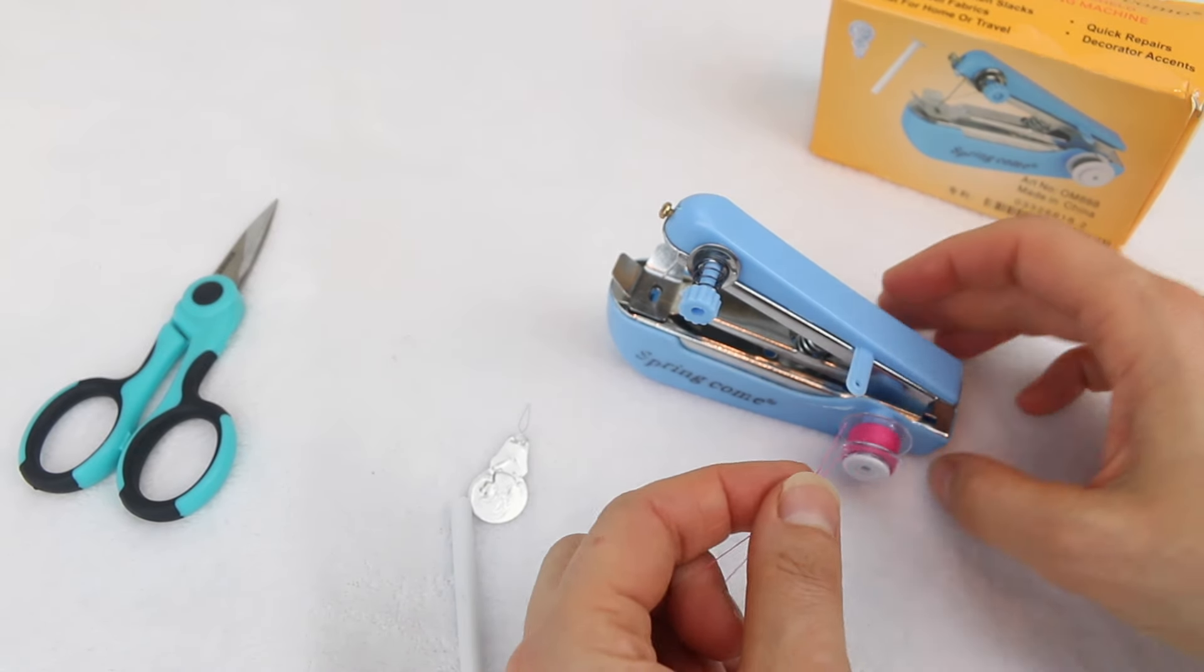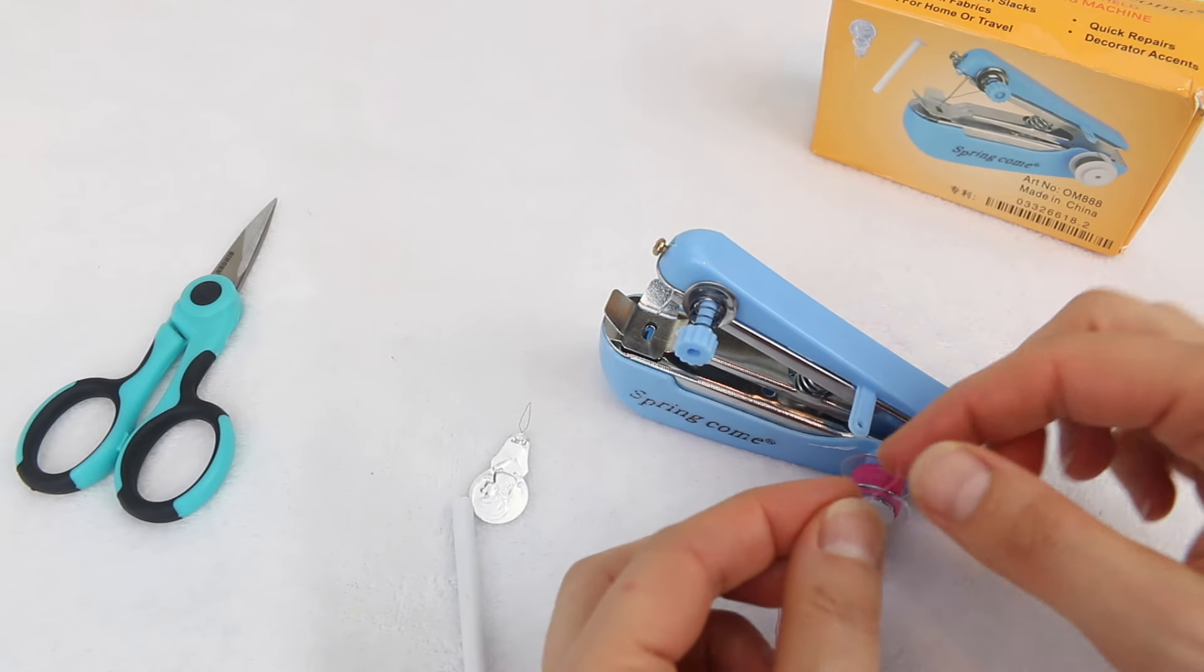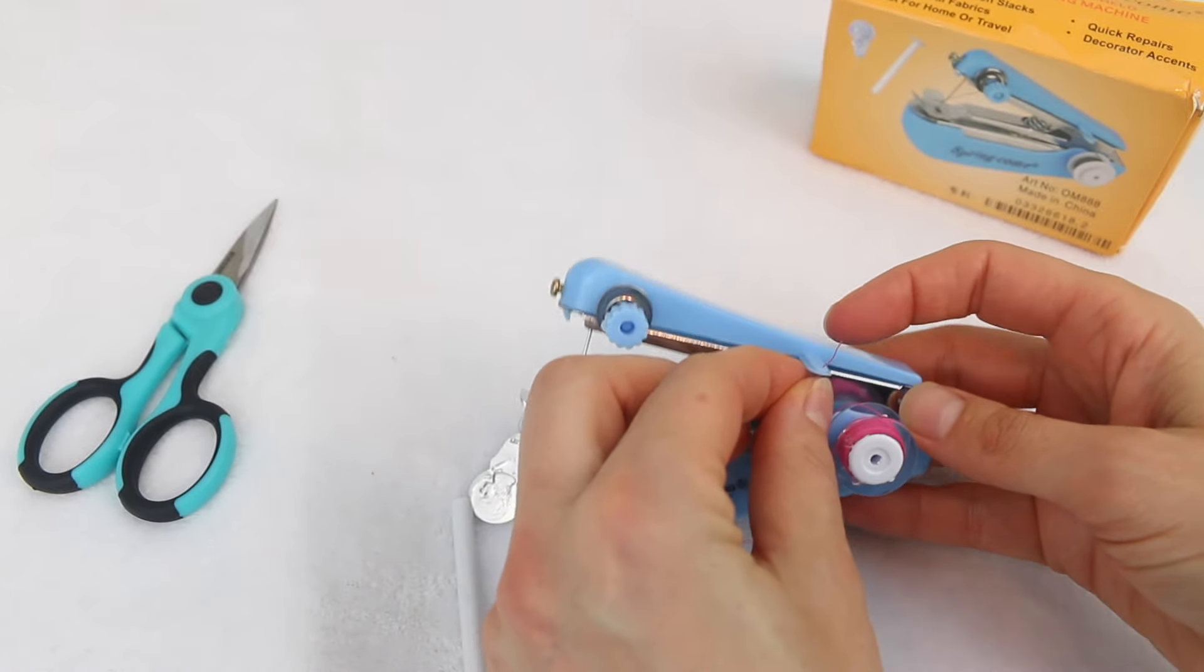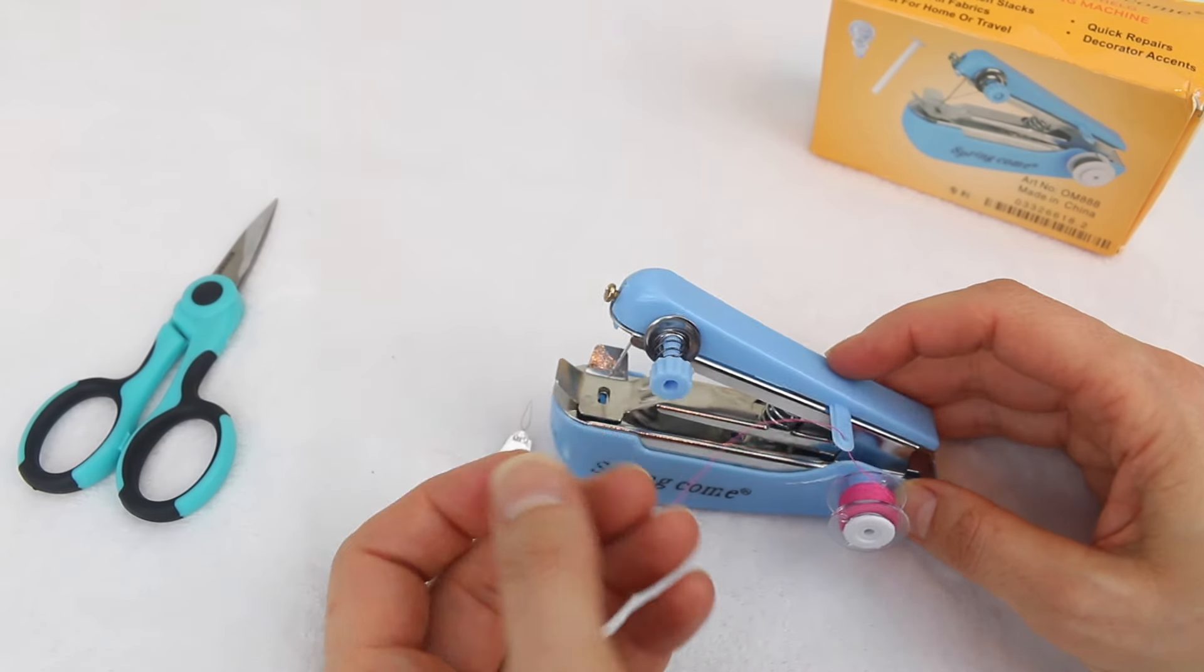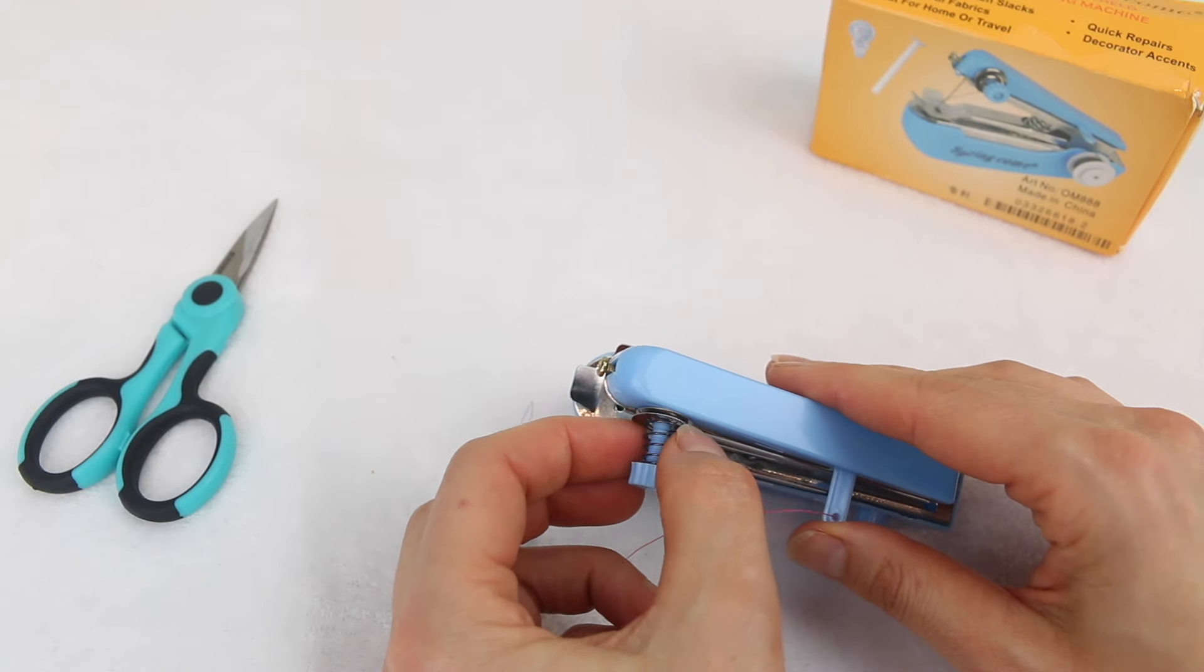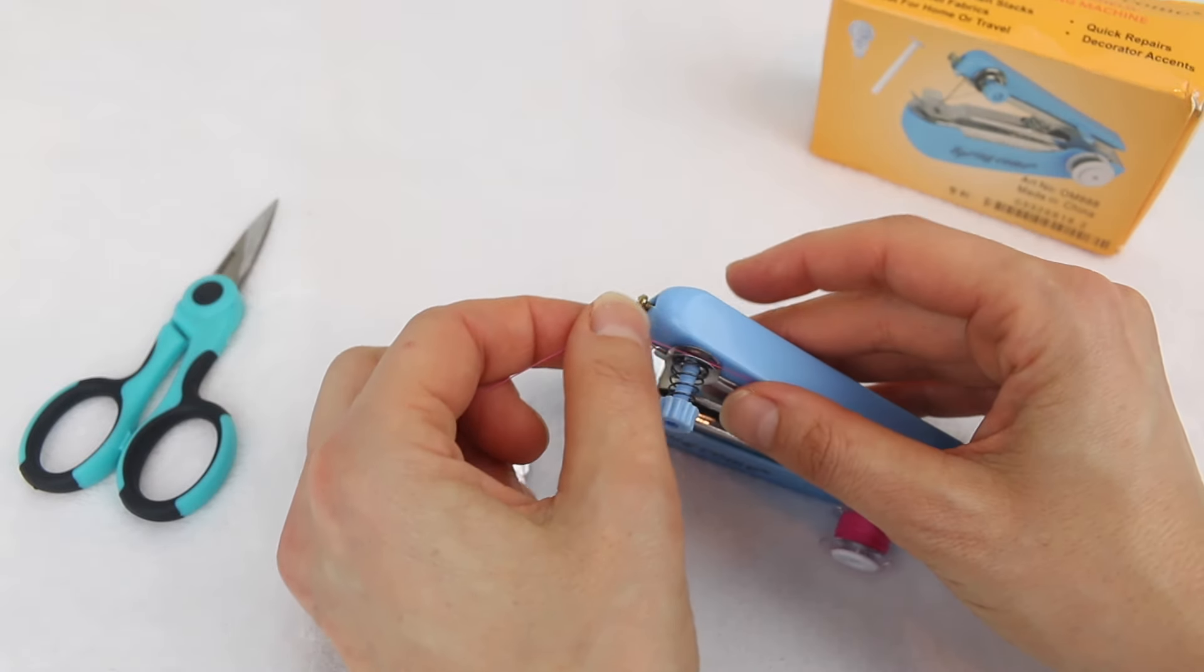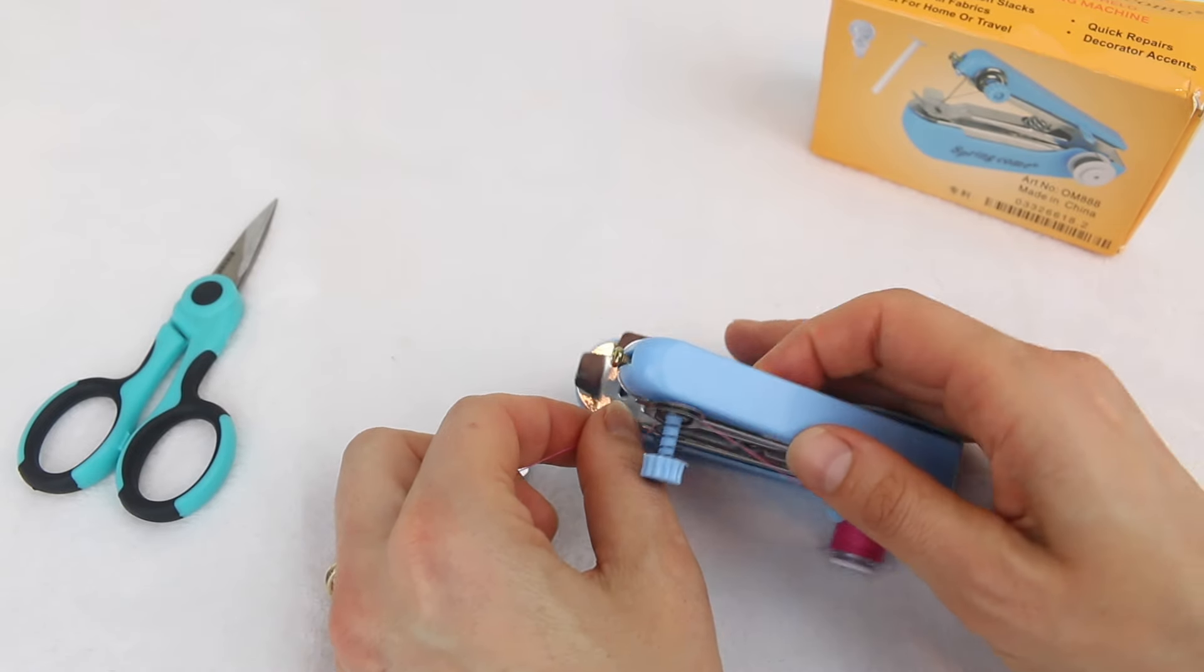So to thread our little machine up, you need to pass your thread tail here through your first thread guide. And it needs to go from the bottom and out through the top like that. Your next thread guide is your tension discs here. So you'll find there's two discs that are held together with a spring. So you need to make sure your thread goes in between those two discs.